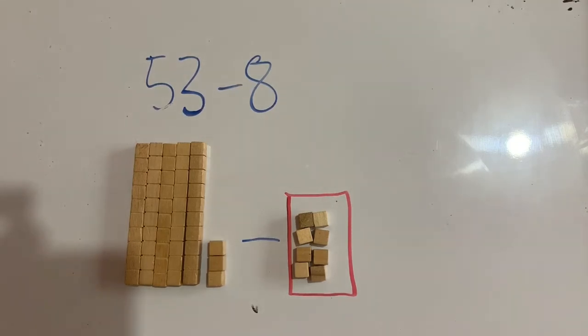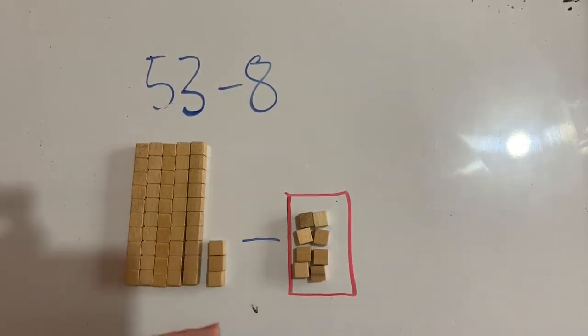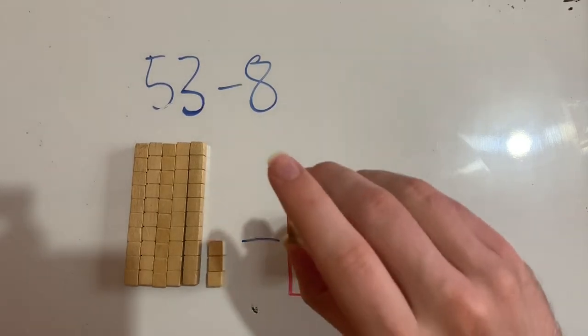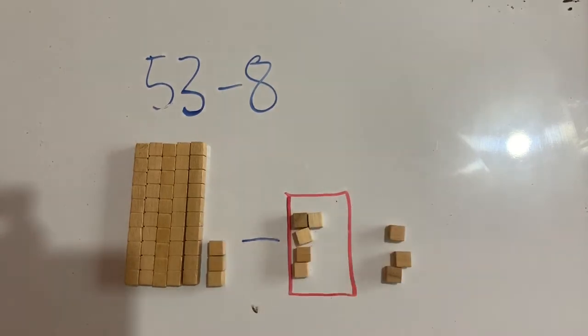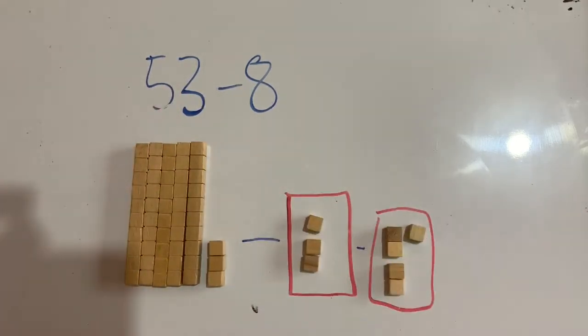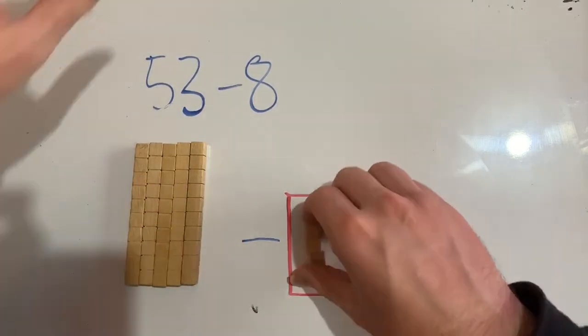Numbers become much easier to deal with when we round them to the nearest 10. I want to take away first these 3 extra ones so that I'm just dealing with 50. I need to break this 8 into a group of 3 so that I cancel out those 3, and a group of 5. So now I've got 53 minus 3 minus 5. I'm going to take these 3 away, so I've dealt with that.